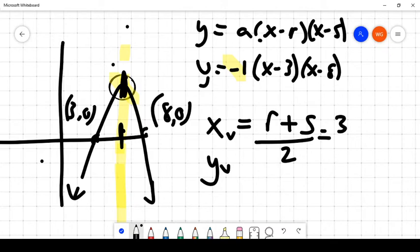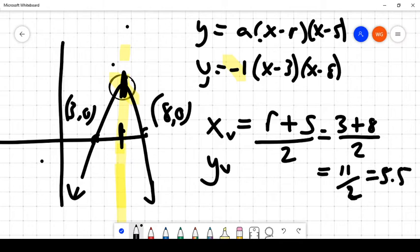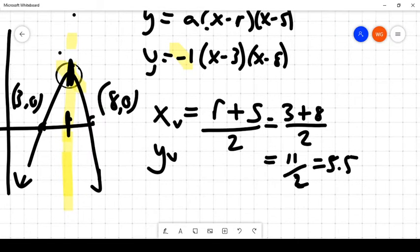So in this case, we would just say, well, it's 3 plus 8 over 2, which is 11 over 2, and of course, 11 over 2 is 5.5. So we would know that the x-coordinate of the vertex in our parabola would be equal to 5.5.